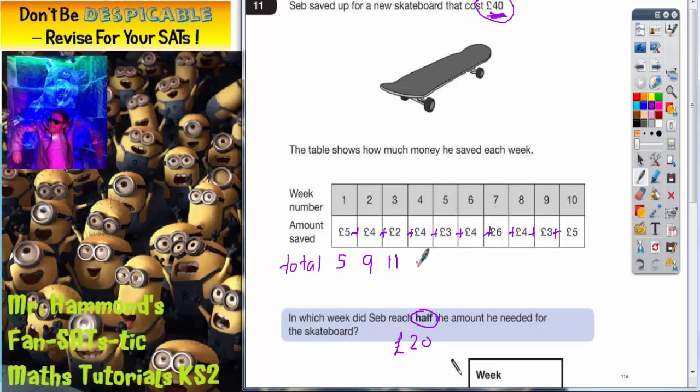Plus another £4 the following week would be £15. Plus another £3 would be £18. Plus £4 is £22. Plus £6 is £28. Plus £4 is £32. Plus £3 is £35. Plus £5 is £40.